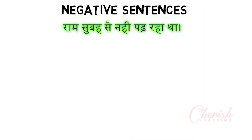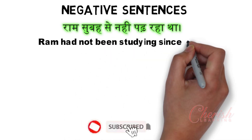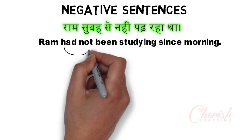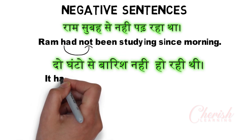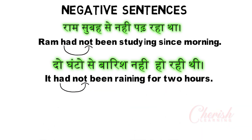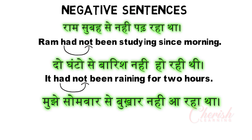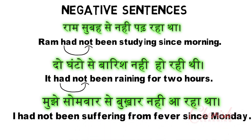If affirmative sentences are clear, then negative sentences will also be clear, because after the helping verb we simply add 'not.' Let's do this quickly. Example: 'Ram was not reading from the morning' becomes 'Ram had not been studying since morning.' 'Had not' comes after the subject. Similarly: 'It had not been raining for 2 hours,' and 'I had not been suffering from fever since Monday.'